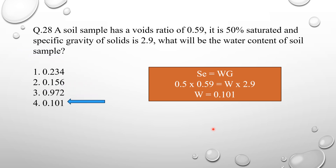Option number 4 is correct here. A simple trick to remember this formula: if you read it like a word, it spells SEWAG. This formula calculates water content using void ratio, saturation, and specific gravity.